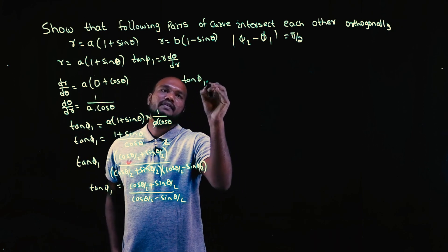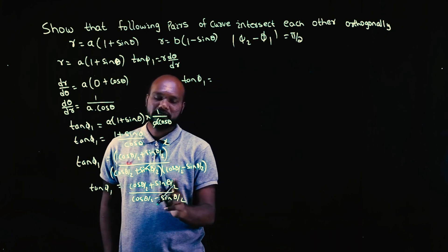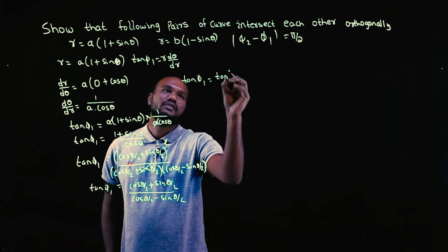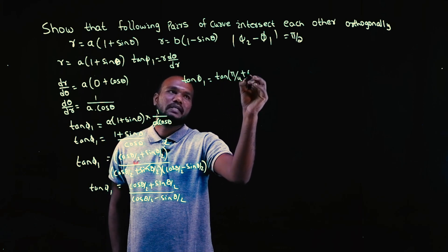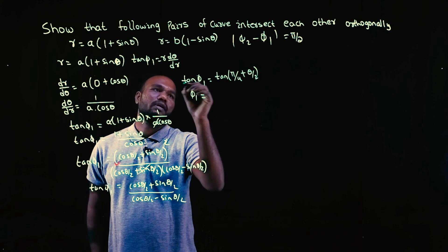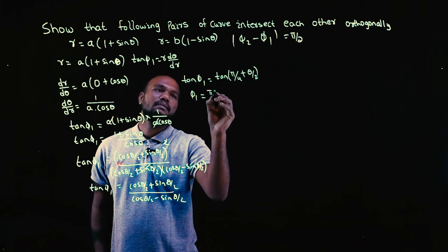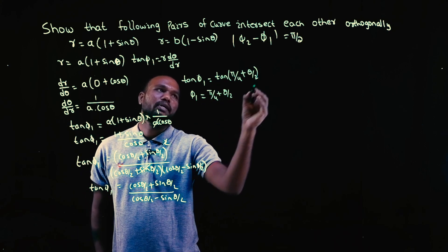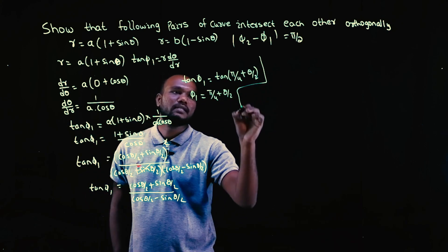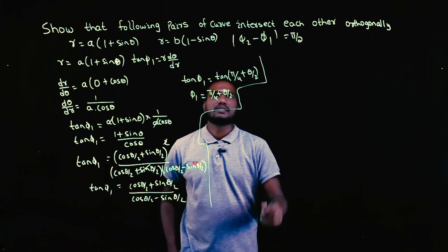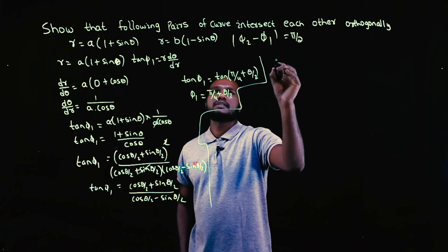This cosine-sine over cosine-sine form corresponds to tan of (π/4 + θ/2). So tan φ₁ equals tan(π/4 + θ/2), meaning φ₁ equals π/4 + θ/2. This is the result for curve number 1.